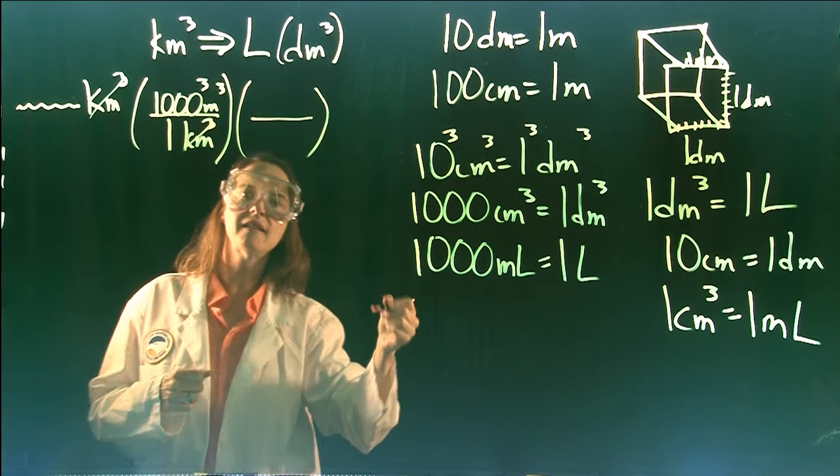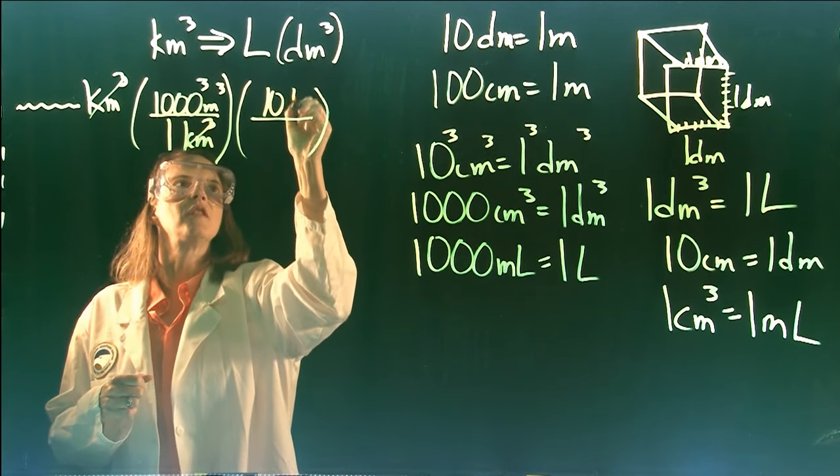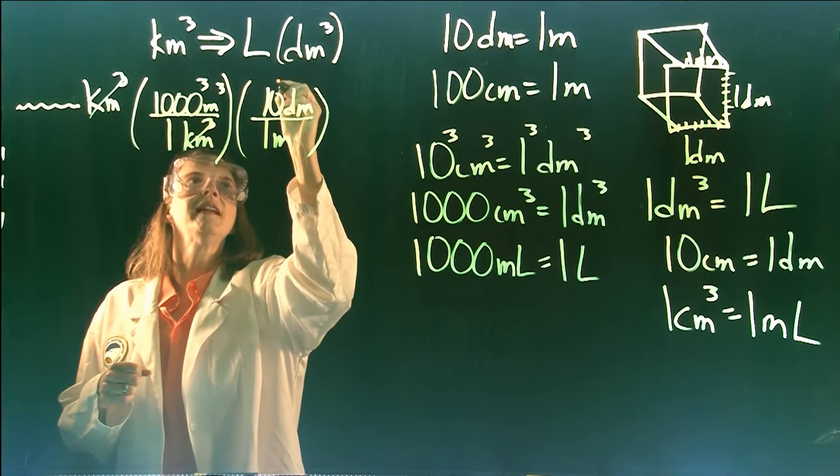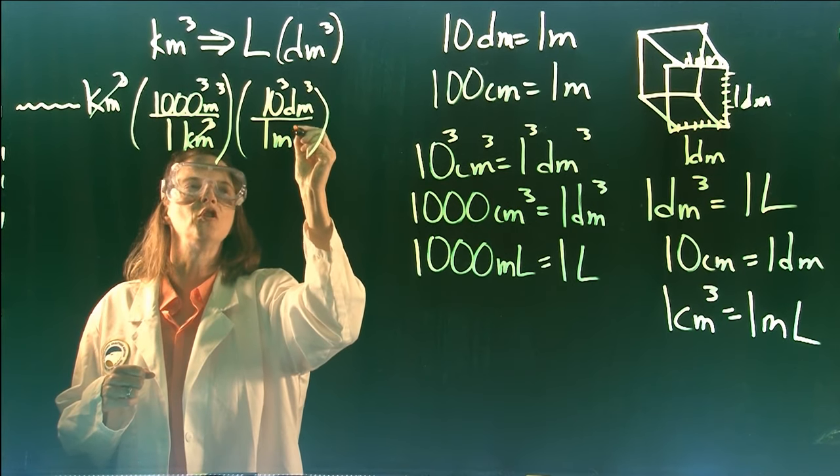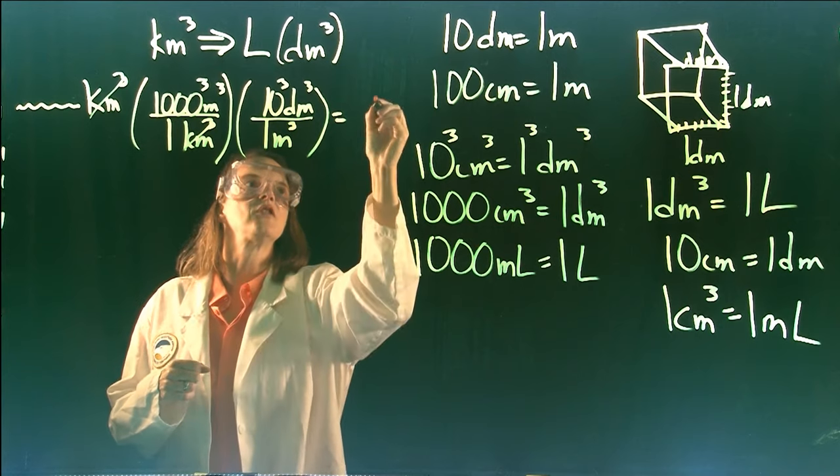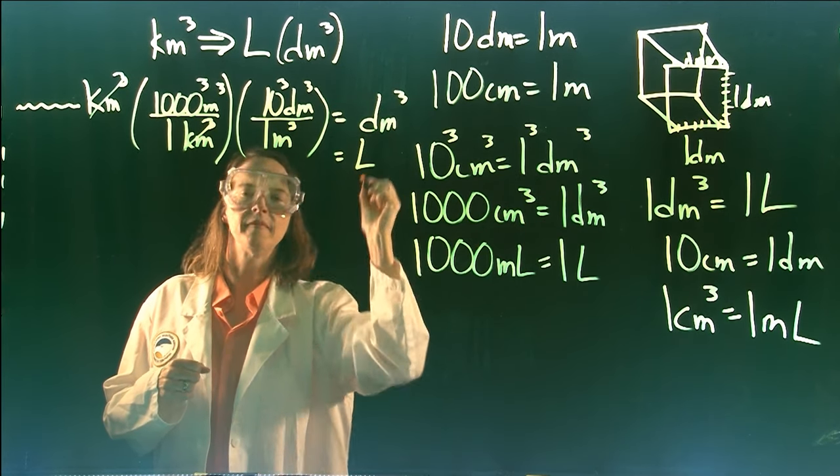You've also memorized that there are 10 decimeters in one meter. We'll set it up so that the units cancel: 10 decimeters over one meter. So the cubic relationship is 10 cubed decimeters cubed over one cubic meter. We have our answer in cubic decimeters, which is the same as liters.